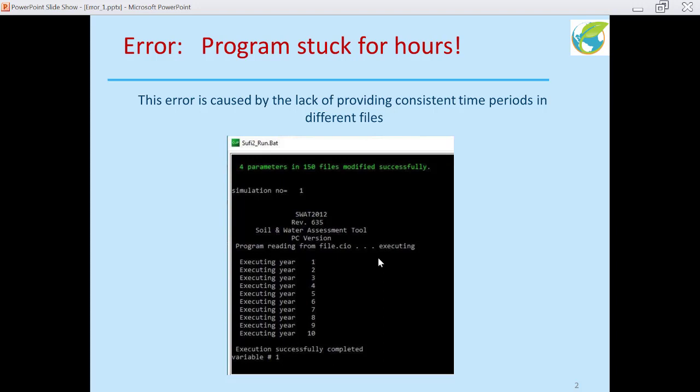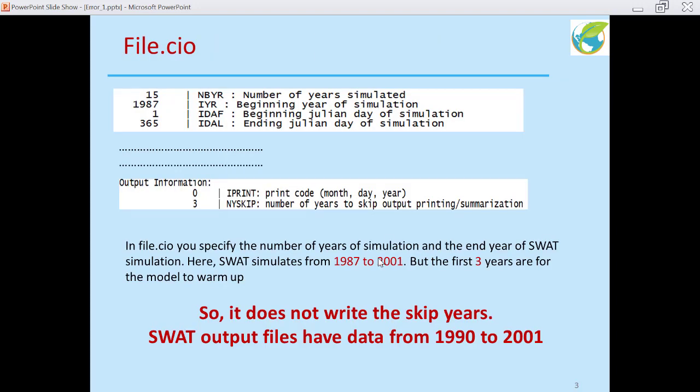So the time appears in three different sets of files. First is file.cio of SWAT. In this file you provide the beginning or the number of years of simulations, 15 years, and this is the beginning year of the simulation, and this is the ending Julian day of simulation. So if you end in a leap year, then this would be 366.